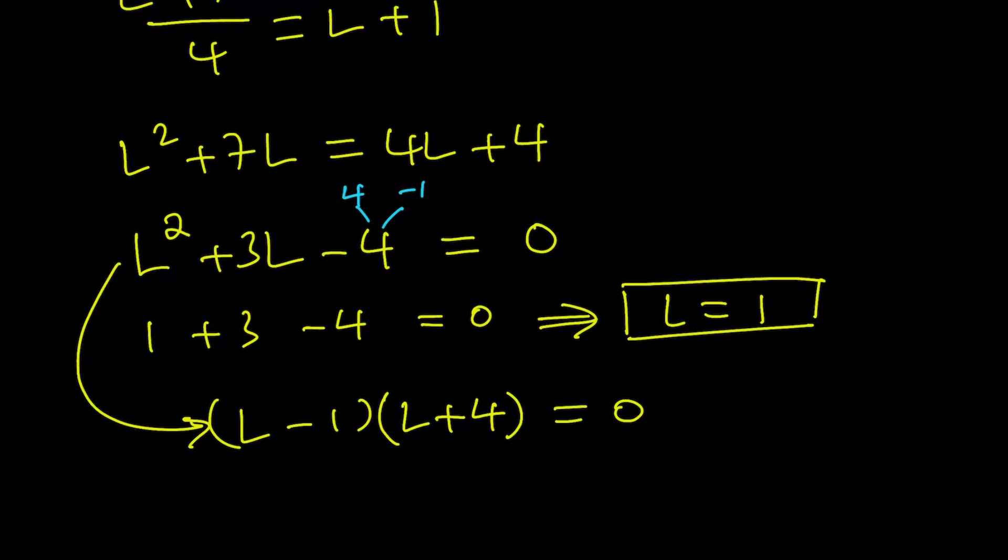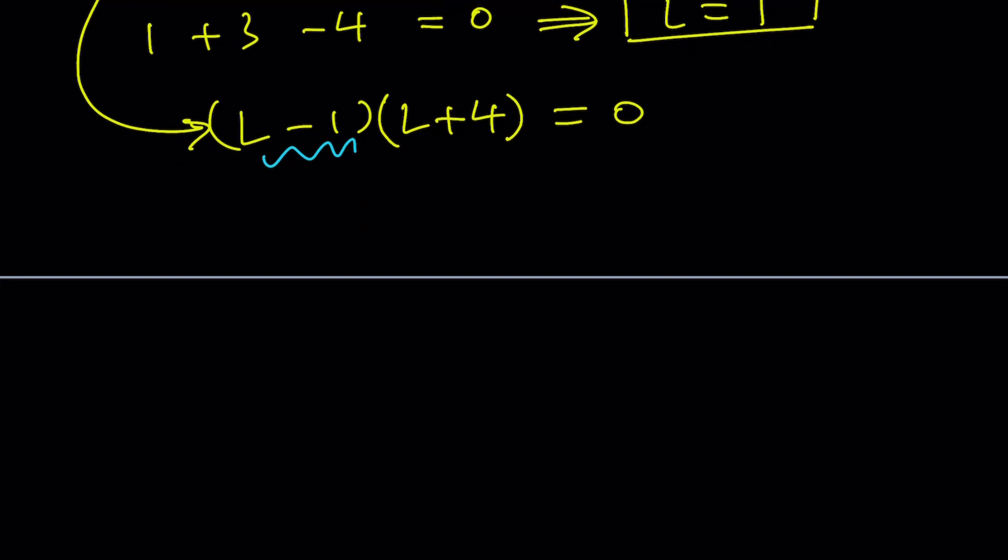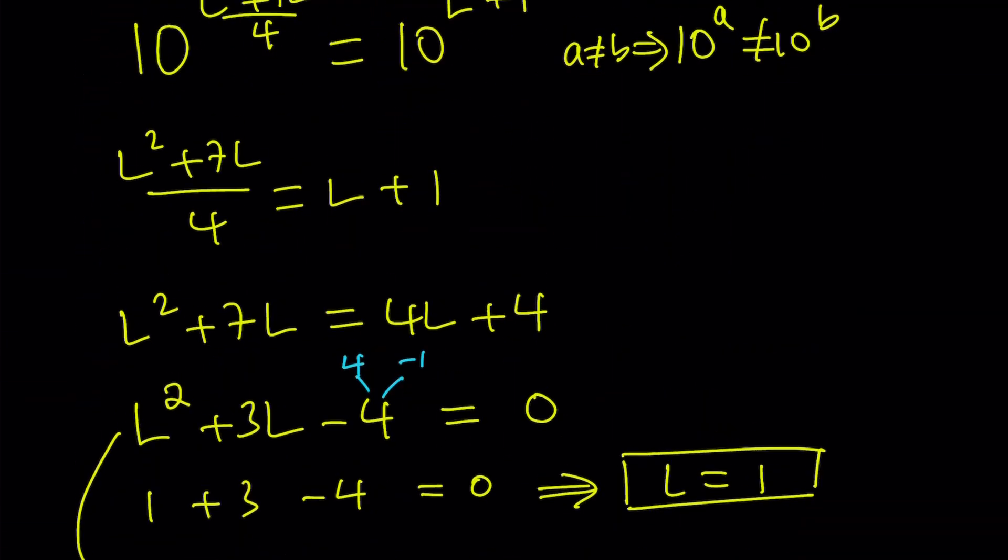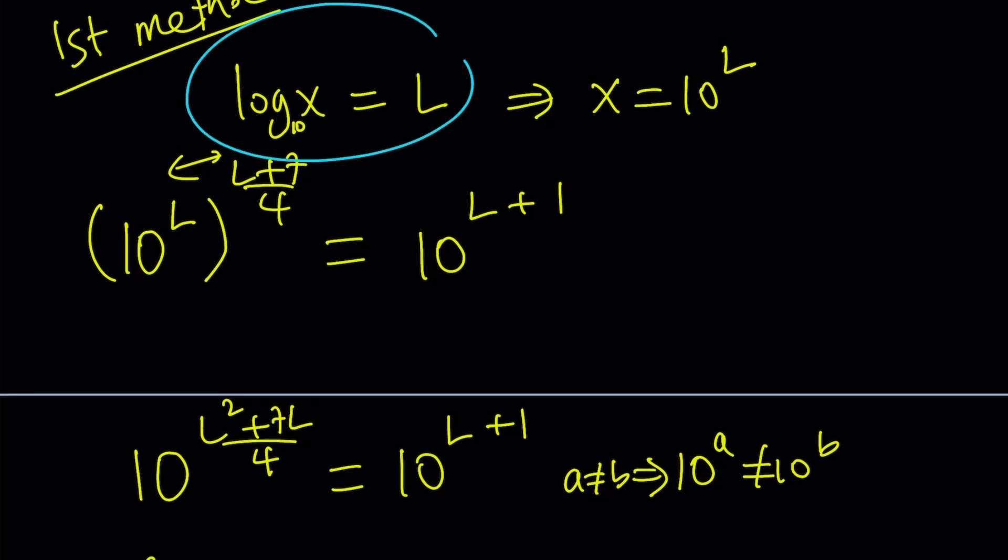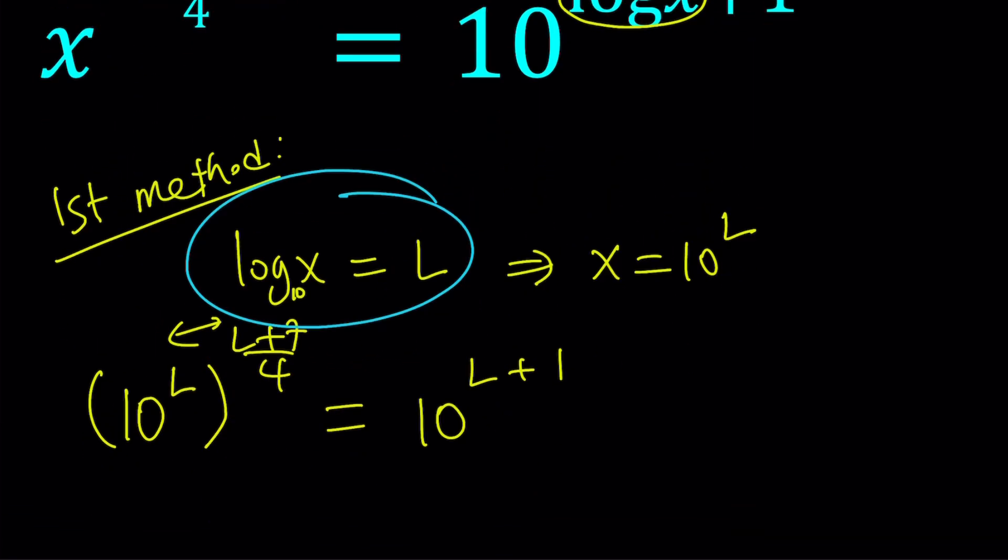We already knew L equals 1, and now from here we get another solution: L equals 1 and L equals negative 4. Now is L equals negative 4 a valid solution? With logs we have to be careful. Whenever you have log x, you have to make sure that x is positive, because the log function for real numbers is only defined when x is positive. We got two solutions so far. X has to be positive, but L is not x, L is log x. That's why we have to back substitute and solve for x.